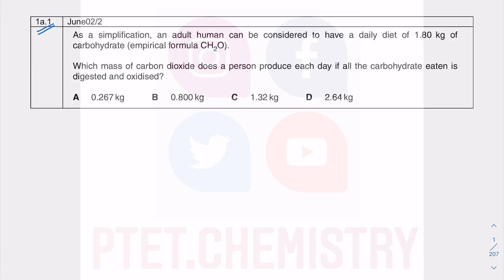The empirical formula of a carbohydrate is CH₂O. Carbohydrate is a polysaccharide, so it's a macromolecule — a big molecule with a much heavier molecular weight than just CH₂O — but the empirical formula is CH₂O, and that's what we're going to use in our combustion analysis.